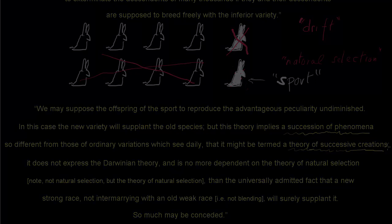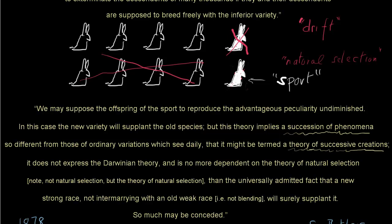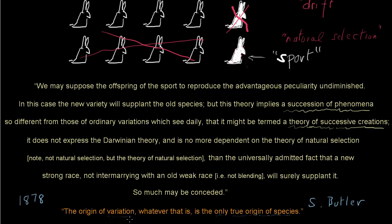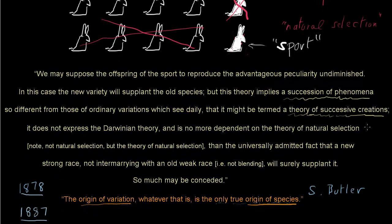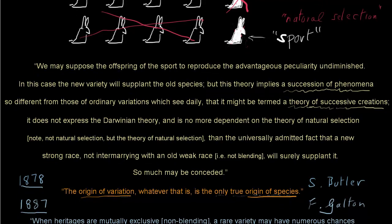Samuel Butler may have been thinking of Jenkin when he made the famous remark in 1878: 'The origin of variation, whatever that is, is the only true origin of species.' And in 1887, Francis Galton gave his perception of the differences between the outcomes of non-blending and blending inheritance in an address to the Anthropological Institute.